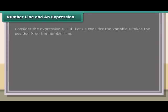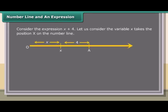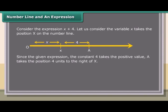Number line and an expression. Consider the expression x plus 4. Let x take a position on the number line. Since the constant 4 takes a positive value, point A takes a position 4 units to the right of x. If the expression is x minus 4, the position A will be to the left of x.